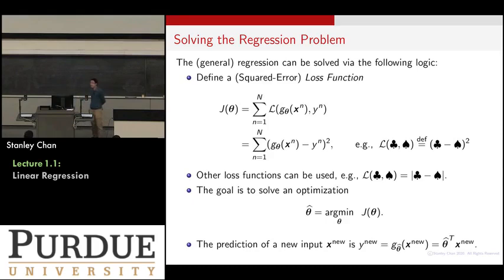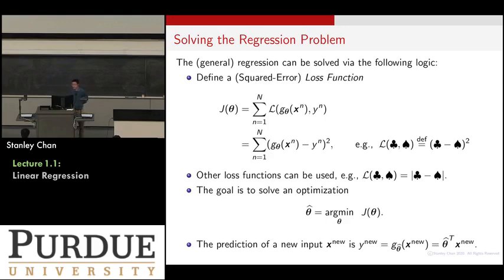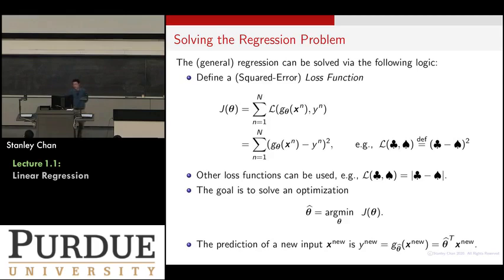Can we use another form of loss? Yes. But why do we choose square? It is because square is differentiable, so you can take the derivative, set it to zero, and get an analytic form. You can use the one-norm — the absolute value as your loss function — but then you need to solve a more difficult optimization problem and may not have a closed form. The goal of regression is to find a theta that minimizes the loss function. Once you have the minimizer — called theta-hat — you put it into your model, pass in a new testing data point x, and the model returns the predicted value.